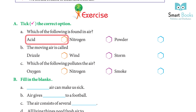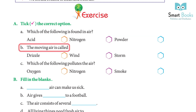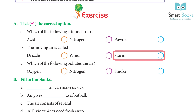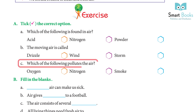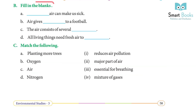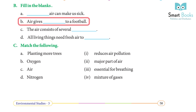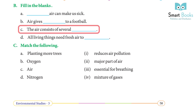Exercise A — Take the correct option: a) Which of the following is found in air? Answer: Nitrogen. b) The moving air is called? Answer: Wind. c) Which of the following pollutes the air? Answer: Smoke. Exercise B — Fill in the blanks: a) Dash air can make us sick. Answer: Polluted. b) Air gives dash to a football. Answer: Shape / Filled.